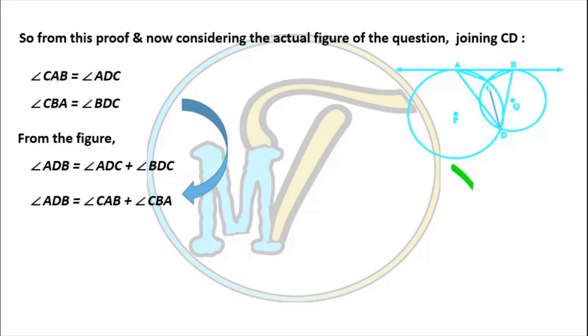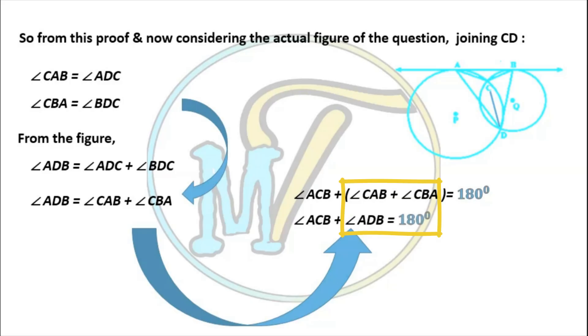Now, considering triangle ABC, from the angle sum property of triangle, sum of all three angles of the triangle equals 180 degrees. Here we have replaced this bracket by angle ADB. Therefore by solving, we got the result of 112 degrees.